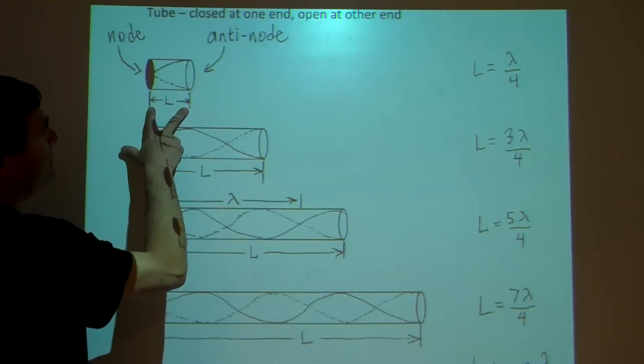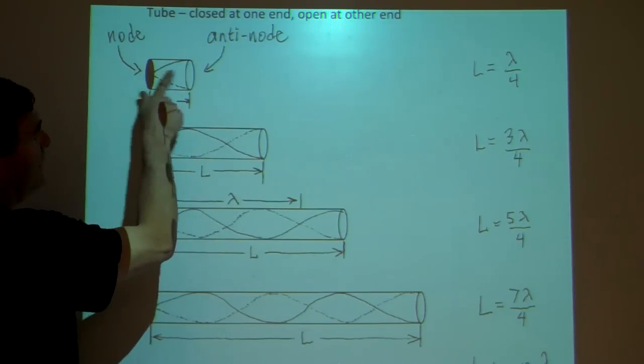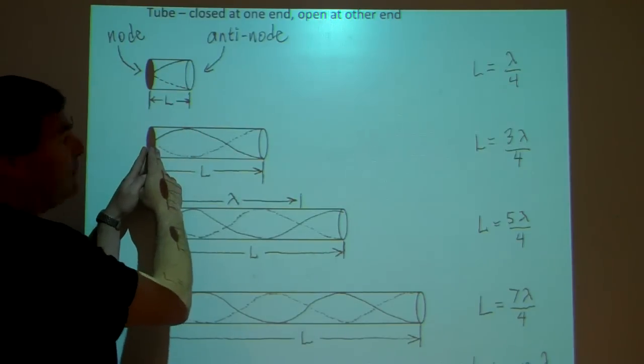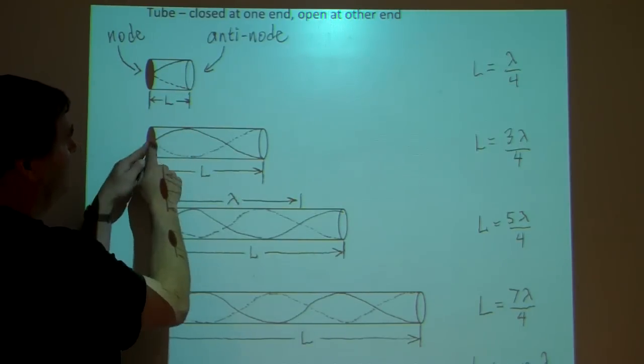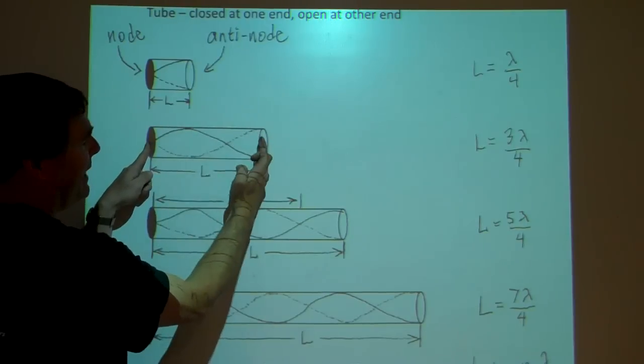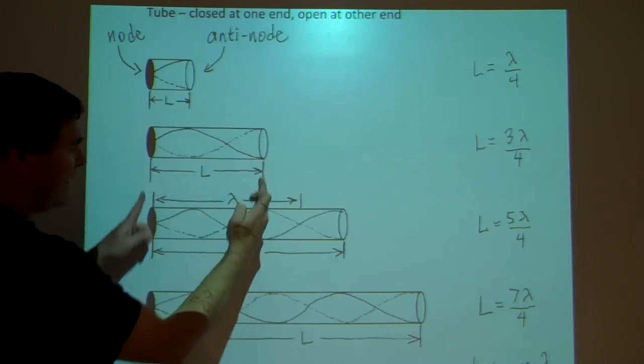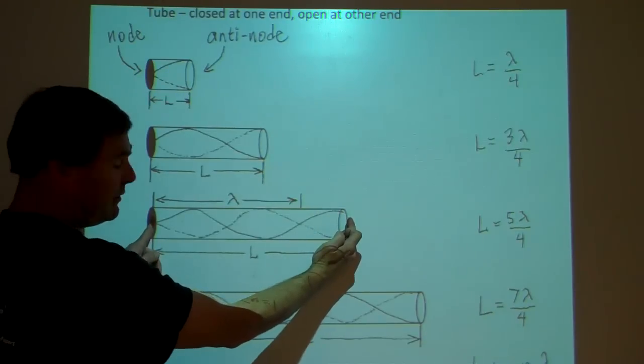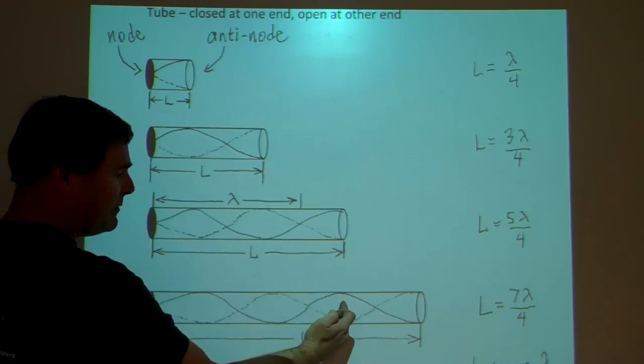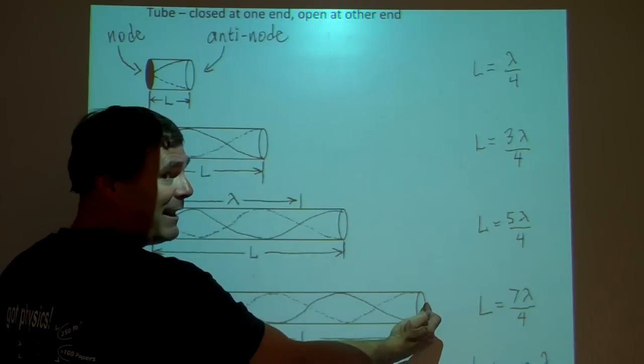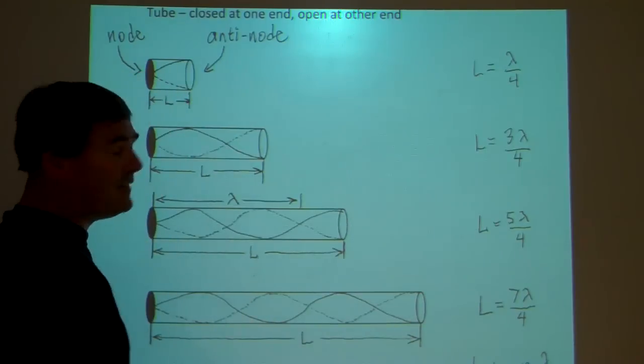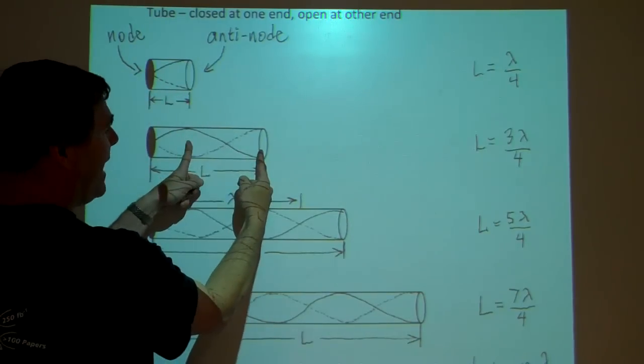Here's the first possibility, where there's a node and an anti-node. Staying with the same wavelength, the next possibility is at the next anti-node, and the next possibility after that is at the next anti-node at the open end of the tube. You can see the length of the tube is increasing each time by half a wavelength.